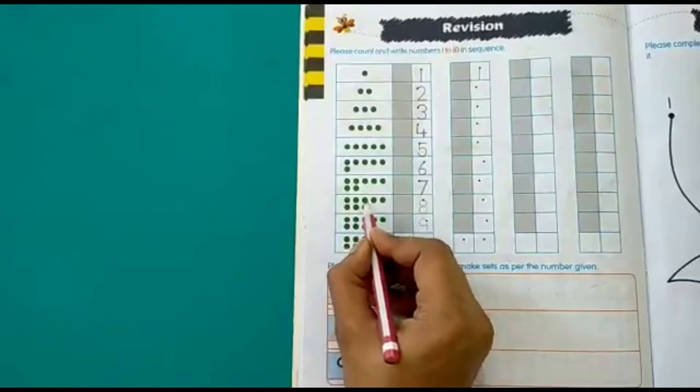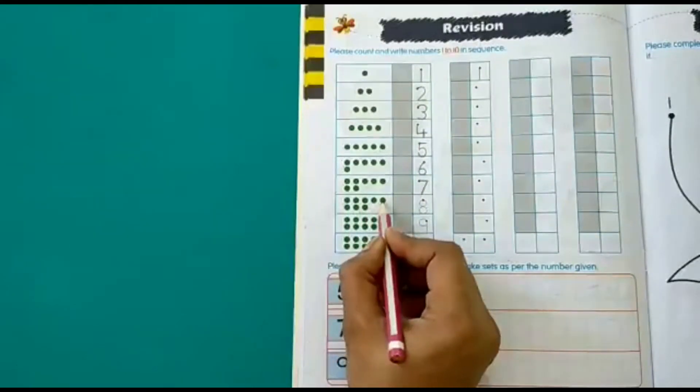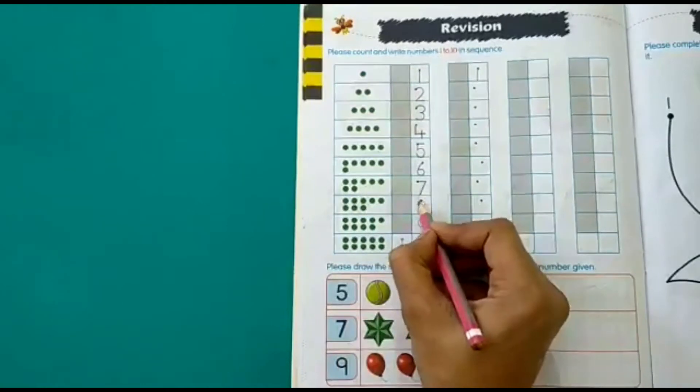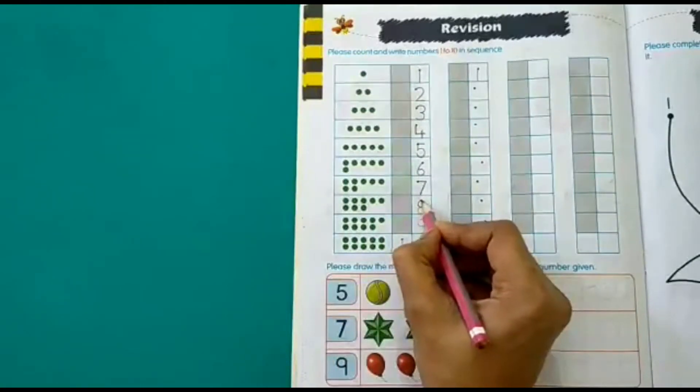1, 2, 3, 4, 5, 6, 7, 8. So we have to write 8.